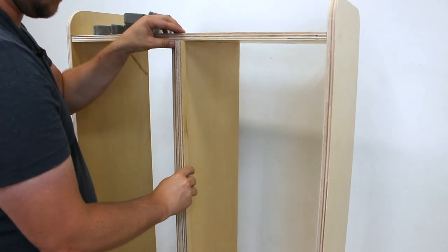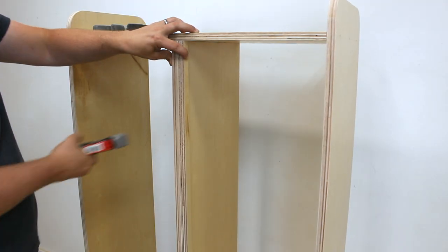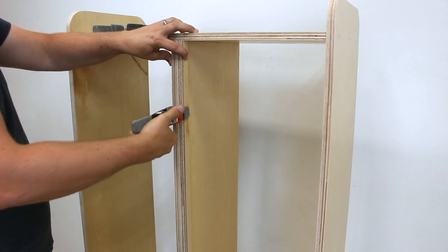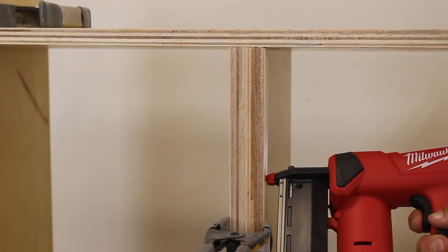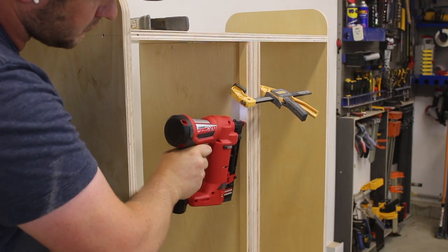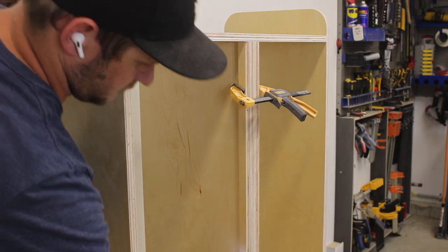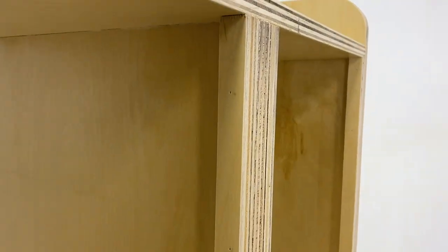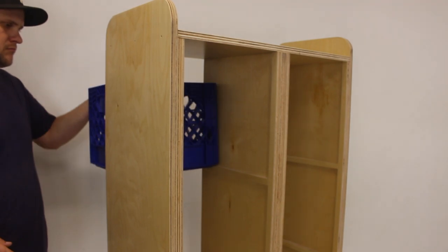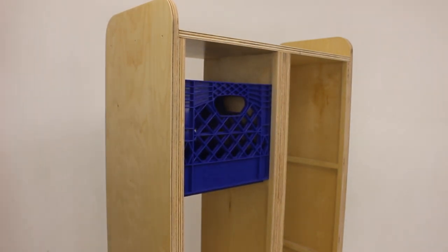We're going to nail these on the inside here to support our milk crates. Before we get those bottom supports in place, we're going to put a couple of strips of wood down the back edge. This will work as blocking to stop our crates from sliding through when we insert them.